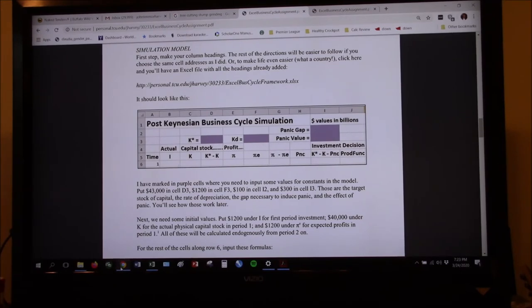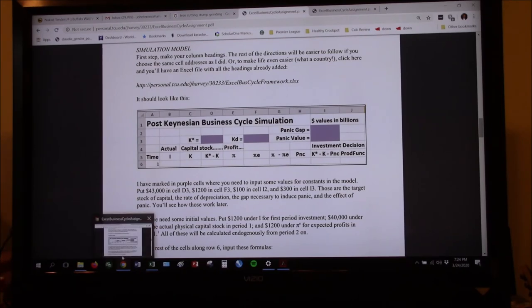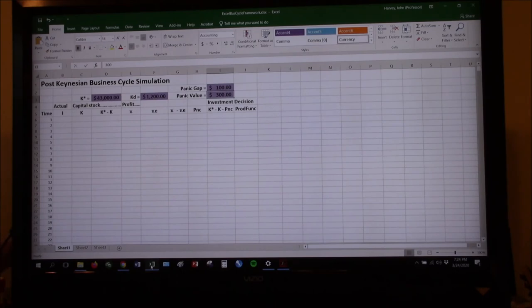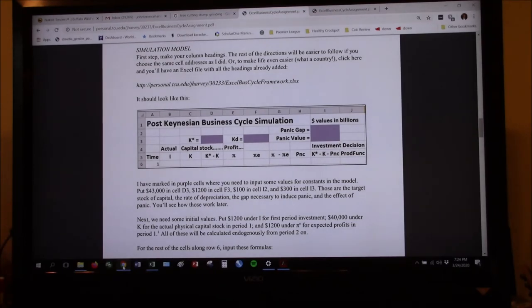Those are the target stock of capital. So in D3 was that K star. That's what firms want to get to in aggregate. They want to get to $43. Oh, and I forgot to look at the units, didn't I? I suspect it's got to be billions. So with it, it's $43 trillion. But I'll look that up in just a second because now it bothers me. And the, let's see. Rate of depreciation is in F3. KD is how fast stuff wears out, which is what? Oh, I got up and looked at the TV like I was going to see it over there. $1,200. So stuff wears out $1,200 a quarter or $1,200 billions a quarter.